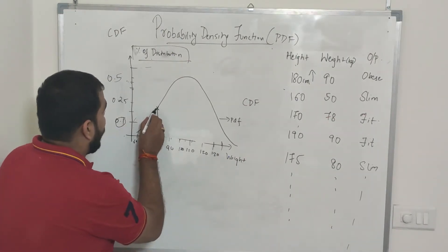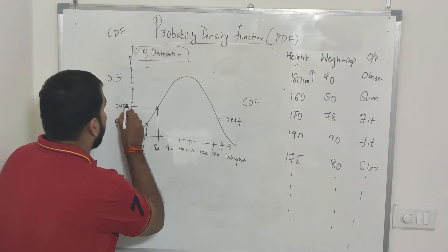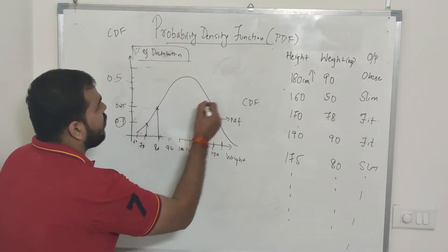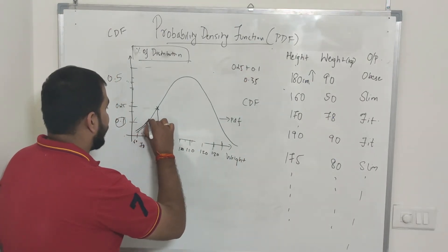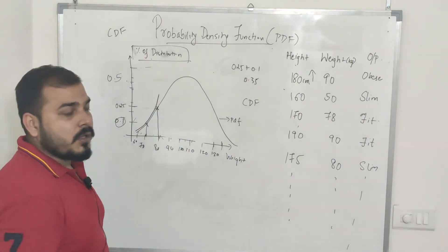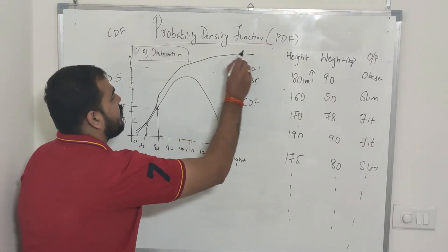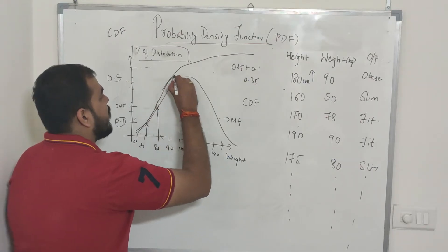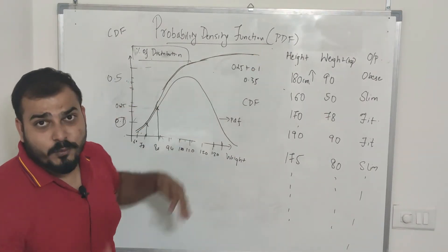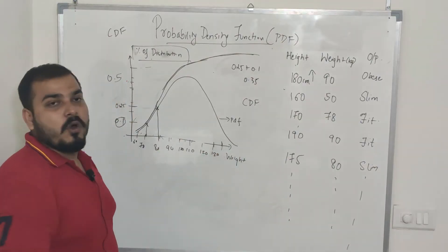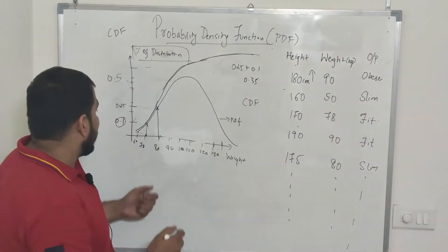In CDF, for any given point, we add up all the PDF values from the beginning up to that point. So if the first region gave 0.1 and the next gives 0.25, the cumulative value becomes 0.35. As we keep adding these values across each point, we get a curve that keeps increasing. Towards the end, the slope flattens because fewer points remain — and this is what a CDF curve looks like.